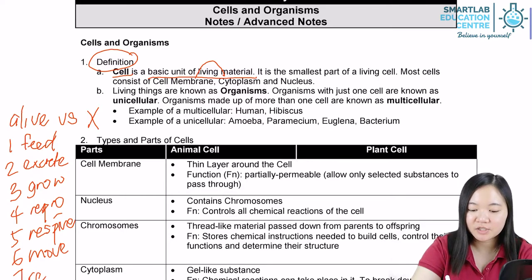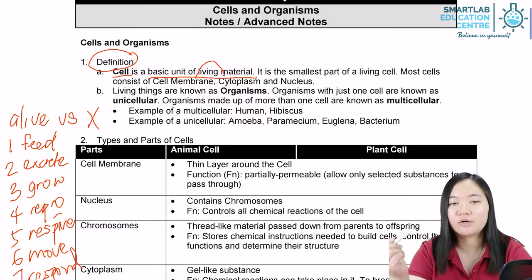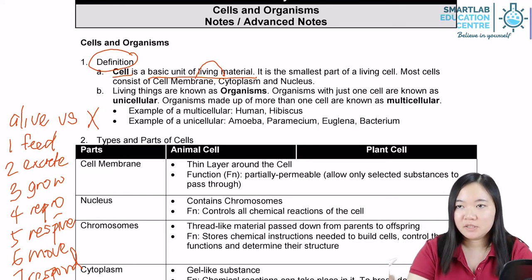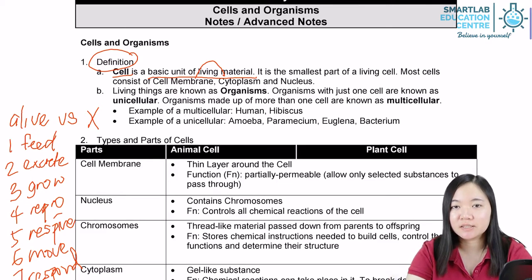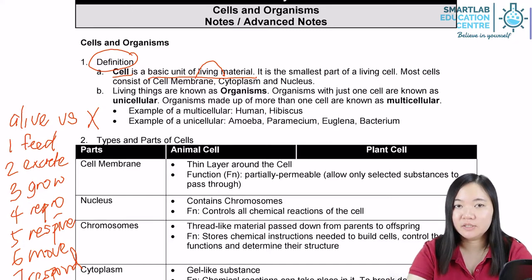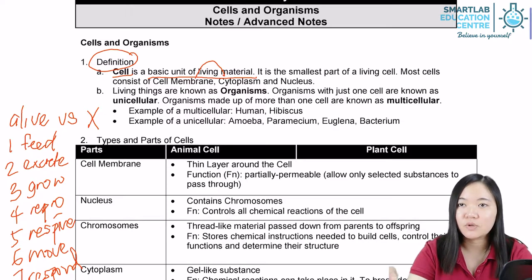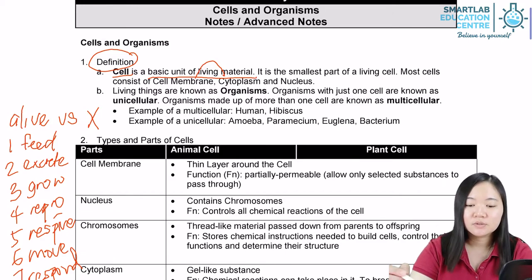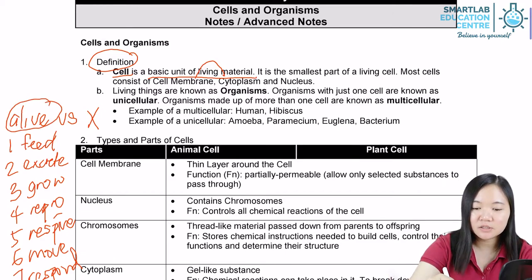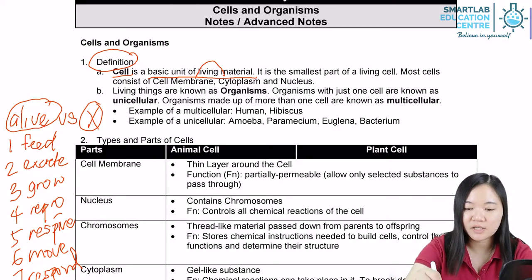The last one, number seven, is respond — they respond to the outer environment. Like plants, they respond to light and grow towards the sunlight. Like animals, they tend to live near places with a lot of water, and they run away if there is a stimulus that causes pain. So they respond, and this differentiates things that are alive from things that are not alive.